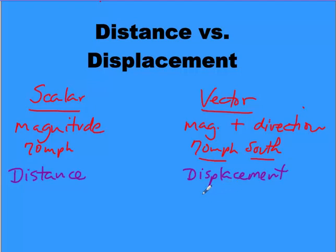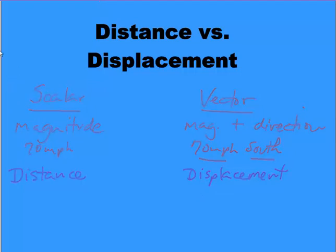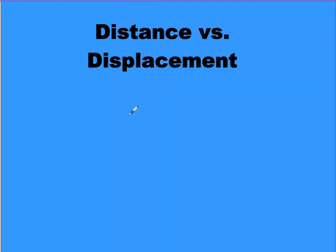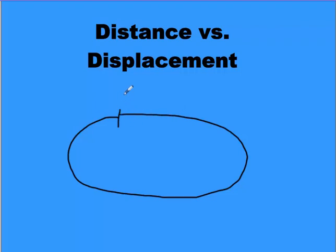Now, displacement is how far from your original position did you end up. So let me give you an example. Let's say I go one time around a track. Let's say here's my distance around the track. And let's say this is 400 meters. If I were to travel this distance, if I start here and I travel all the way around, and I come back to here, and I end up here, I traveled 400 meters. So that means my distance, because it is scalar, it doesn't make any difference. My distance is 400 meters.